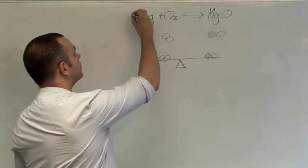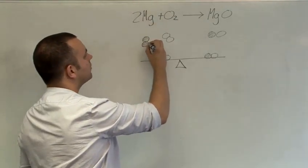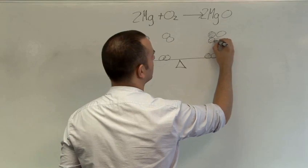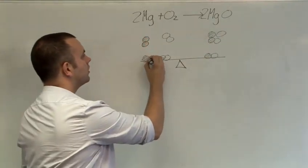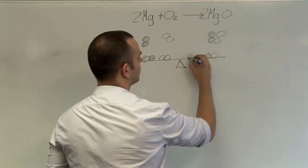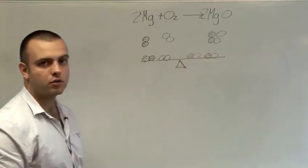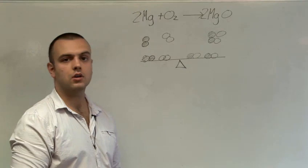So what we do is we balance. We put in two magnesium atoms and two magnesium oxide molecules. This means that we have the same before and after the reaction so the equation is balanced.